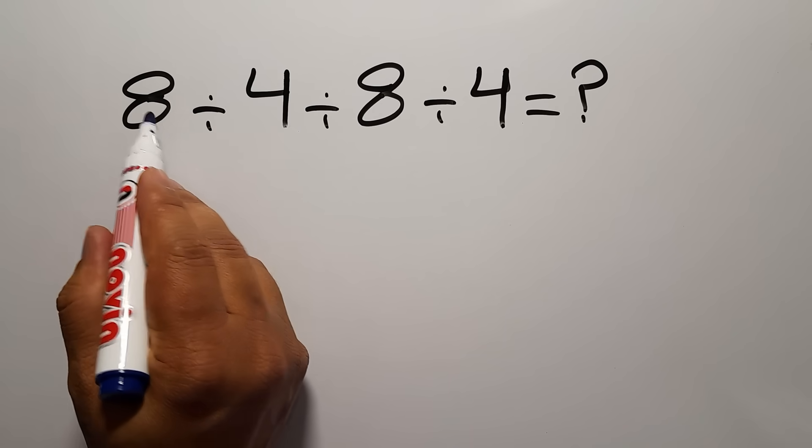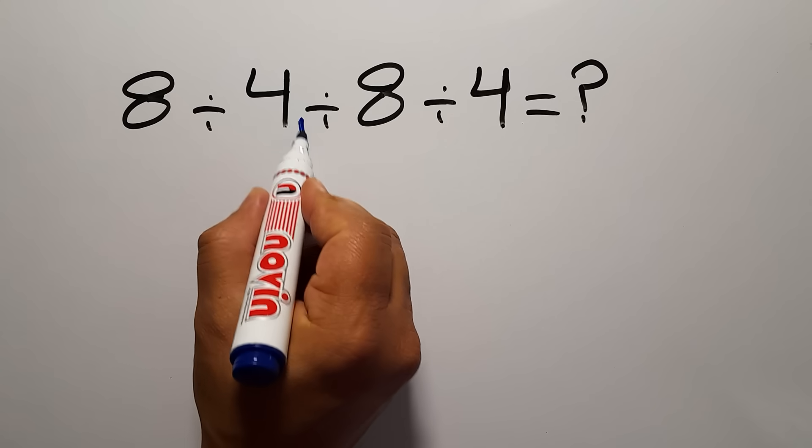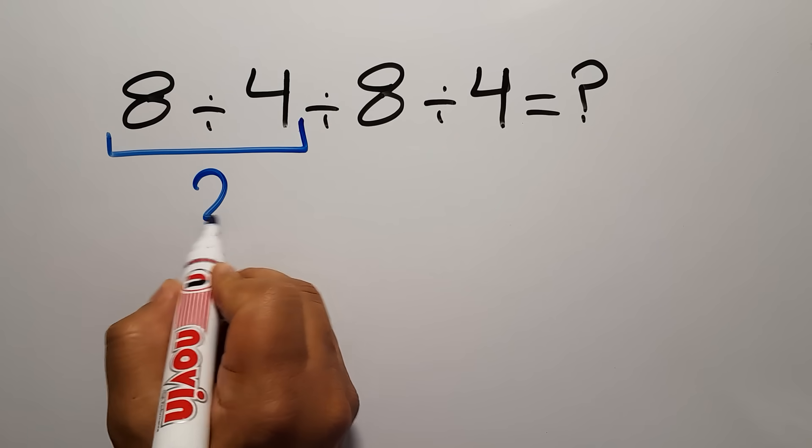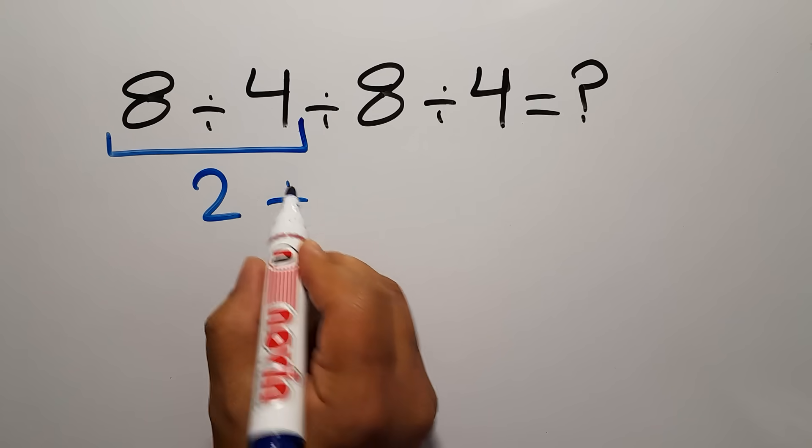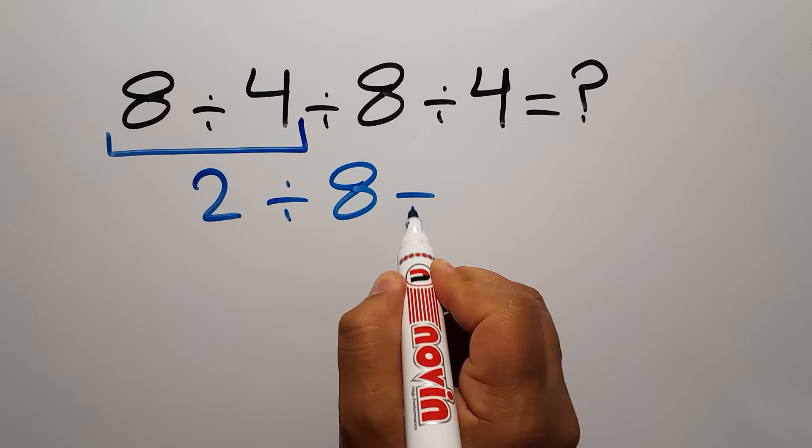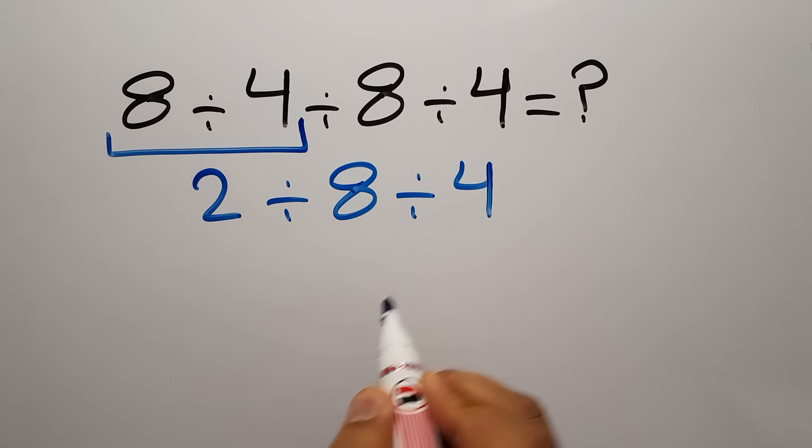So 8 divided by 4 gives us 2. Now we have 2 divided by 8 divided by 4.